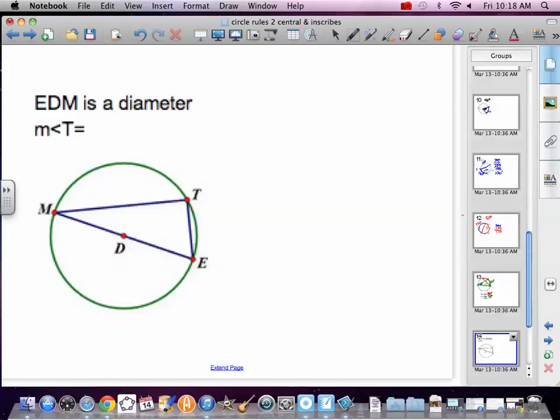All right. So EDM is a diameter. So this is a diameter. So that means this arc is, diameter is half a circle, going through the center. So 180 degrees. So that makes T 90 degrees, which would make that a right triangle. Oh, awesome. Right triangles. Those are kind of important, aren't they?